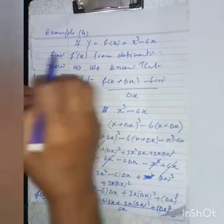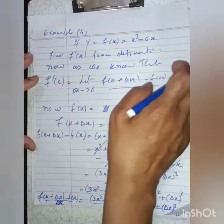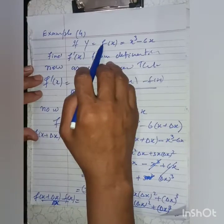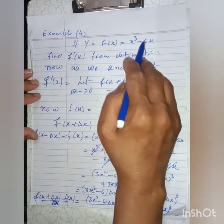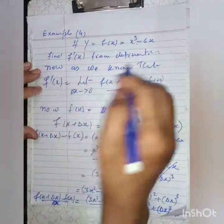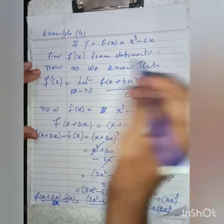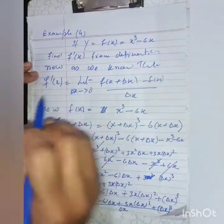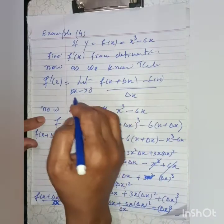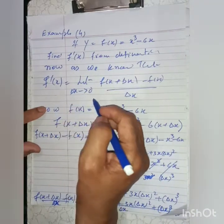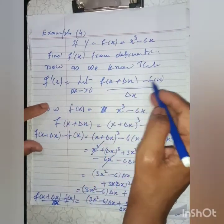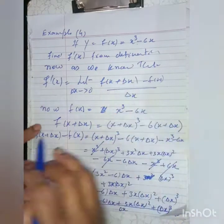Example four: if y = f(x) = x³ - 6x, then find f'(x) from the definition. We know that f'(x) is equal to the limit as Δx goes to zero of [f(x + Δx) - f(x)] divided by Δx.